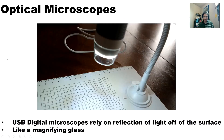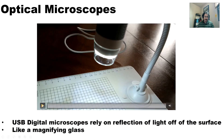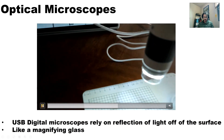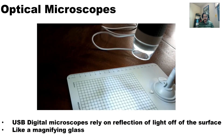I also like these so-called USB digital microscopes - you can get them pretty much anywhere, off Amazon or Monoprice. This one relies on reflection of light off the surface, kind of like a magnifying glass where light bounces off what you're looking at, goes through the lens and hits your eye. I've connected the microscope to a tablet and we're actually just seeing the grid.